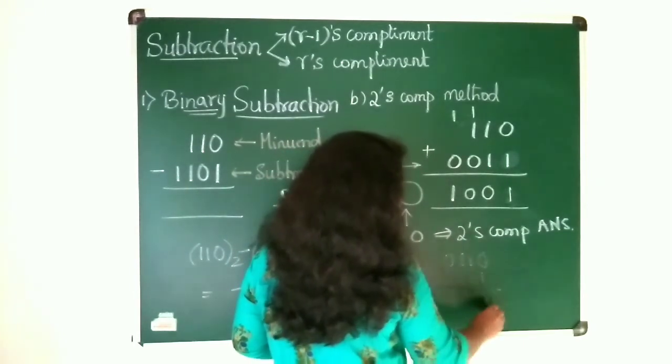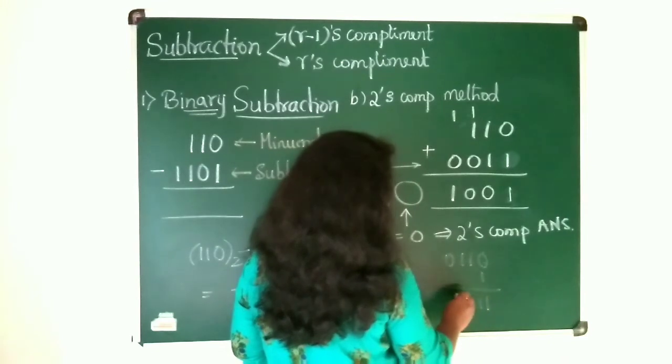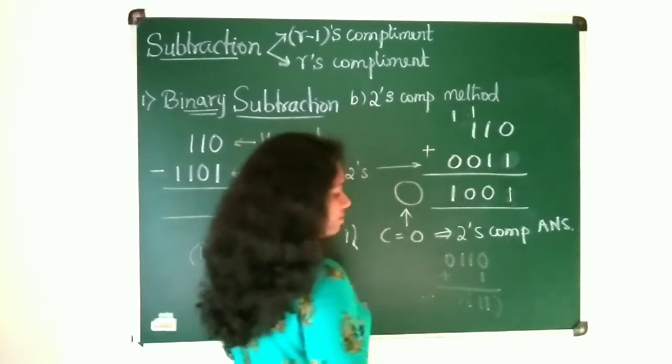You will be getting 1. This is 1, 1, 0. So this is with negative sign.